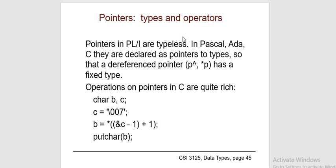For example, if we have an array named 'value', then value and value[0] can be used interchangeably using the pointer. This demonstrates accessing array elements and returning multiple values from memory allocation using pointers.